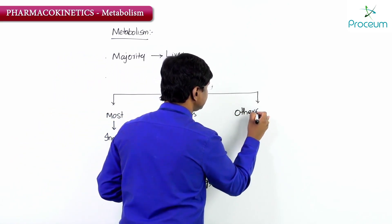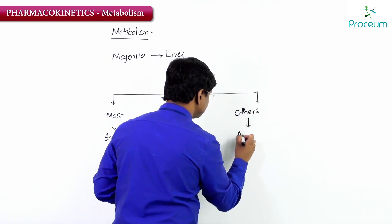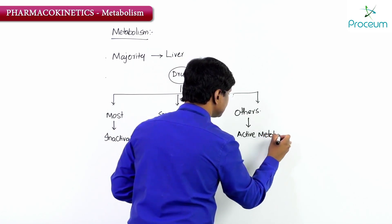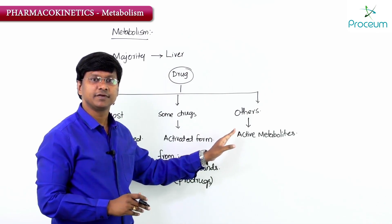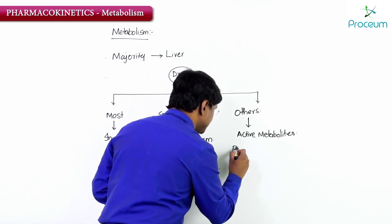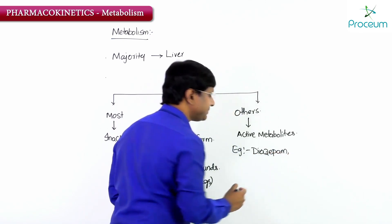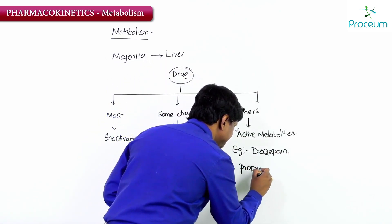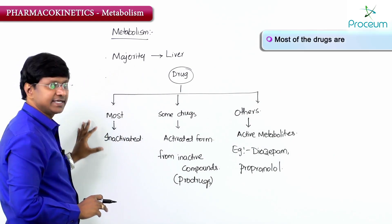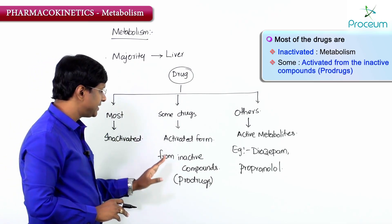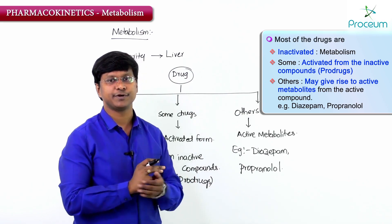Other drugs may give rise to active metabolites, and these active metabolites come from active compounds. Examples of drugs that give rise to active metabolites include diazepam and propranolol.